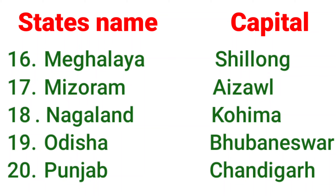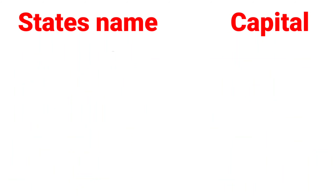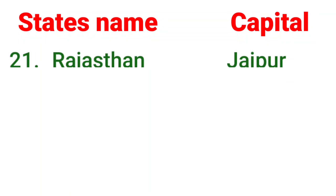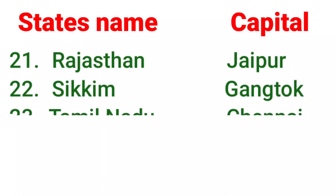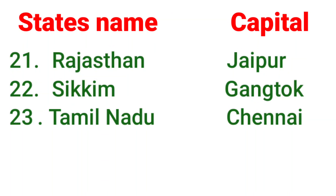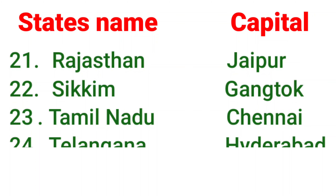Nagaland's capital is Kohima. Odisha's capital is Bhubaneswar. Punjab's capital is Chandigarh. Rajasthan's capital is Jaipur. Sikkim's capital is Gangtok.